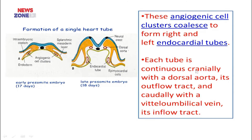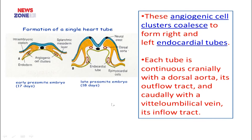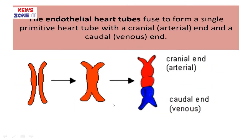Each tube has two communications — cephalic and caudal. The cephalic region is continuous with the dorsal aorta, becoming the outflow tract of the primitive heart tube. The caudal part communicates with the vitelline and umbilical veins, giving the inflow tract. Due to the cephalocaudal and lateral folding of the embryo, the two endocardial tubes come into close apposition, fuse, and form a single primitive heart tube.